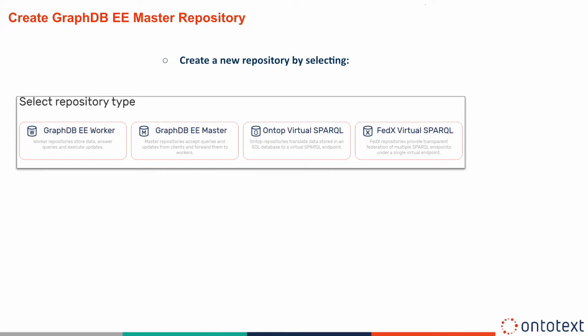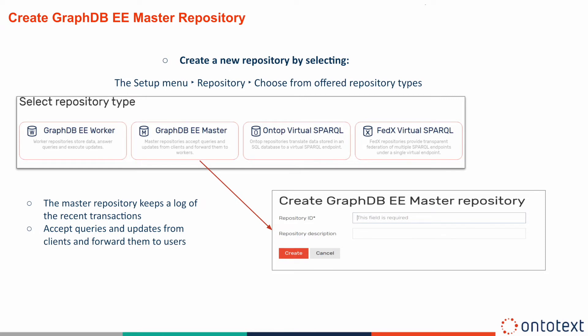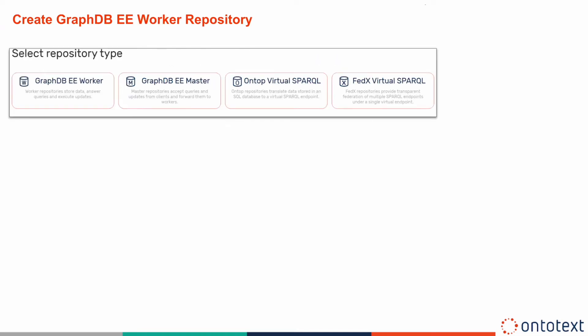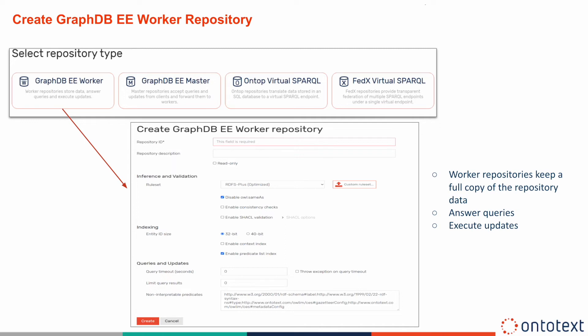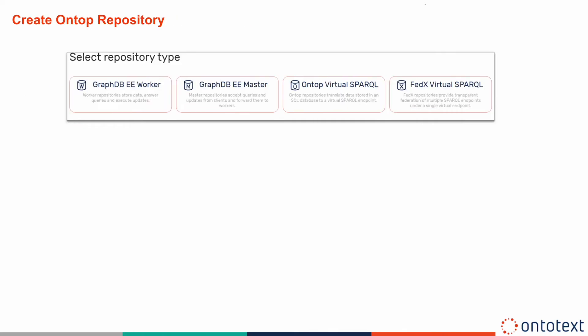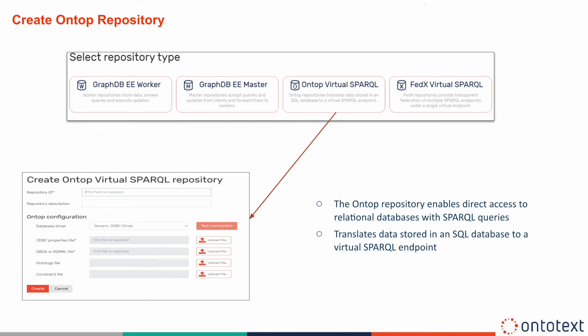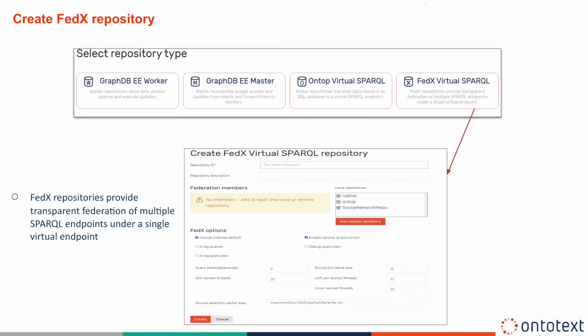Now let's look at creating a repository. You can create a new repository by selecting the Repositories menu item. GraphDB supports different types of repositories. The master one keeps a log of recent transactions, accepts queries and updates from clients, and forwards them to worker repositories, which keep a full copy of the repository data, answer queries, and execute updates. The OnTop repository enables direct access to relational databases with SPARQL queries by translating data stored in an SQL database to a virtual SPARQL endpoint. FedX repositories provide a transparent federation of multiple SPARQL endpoints under a single virtual endpoint.